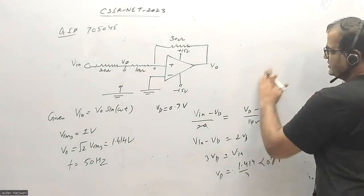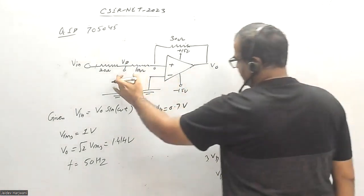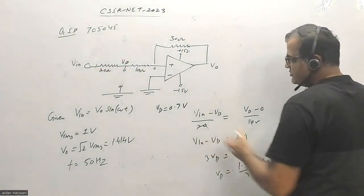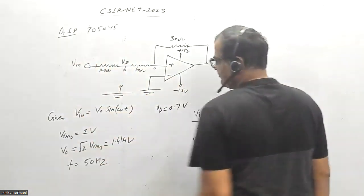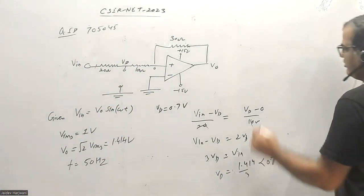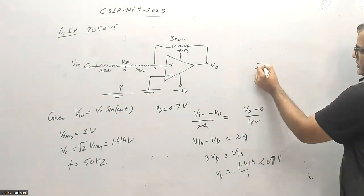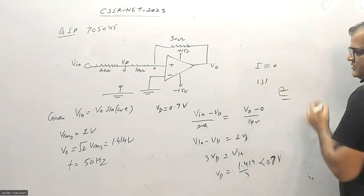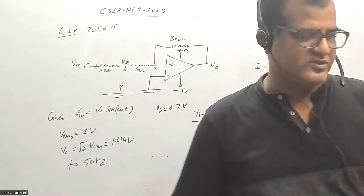Obviously, this will be reverse biased for this peak value, so it will be reverse biased for lesser values also. So the current will always be zero through this diode. This is given as option 3. Option 3 is the correct answer for this question. Thank you very much.